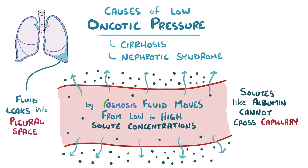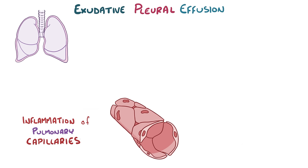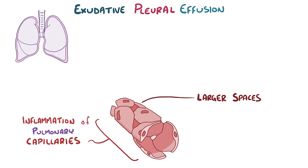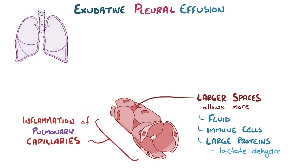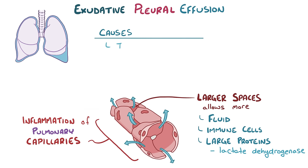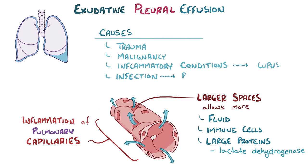An exudative pleural effusion is due to inflammation of the pulmonary capillaries, which makes them a lot more leaky. The larger spaces between endothelial cells allow fluid, immune cells, and large proteins like lactate dehydrogenase (LDH), which is found in all cells, to leak out of the capillaries. The causes can vary and include things like trauma, malignancy, an inflammatory condition like lupus, or an infection like pneumonia.